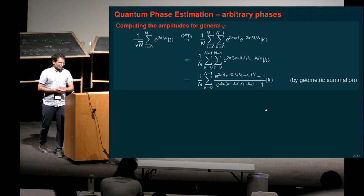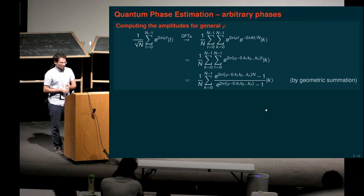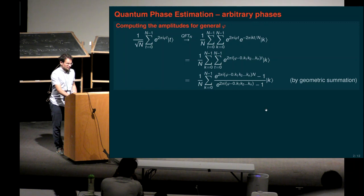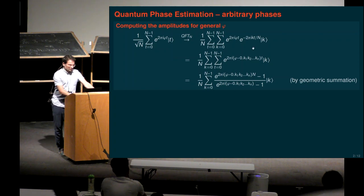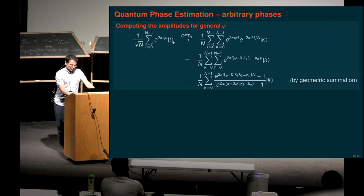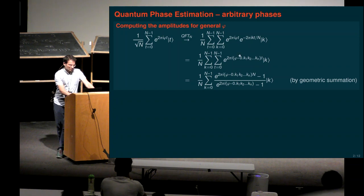People usually stop here and don't compute the details, because it's kind of annoying what happens if you don't have an n-bit number as a phase. But let's compute — it's not so difficult, and there are some important messages we can take away. We start with this state and ask: what happens after we take the quantum Fourier transform? It will not be exactly a single basis state, but we can compute it. Applying the QFT gives a summation over k, with 1 over square root N becoming 1 over N.